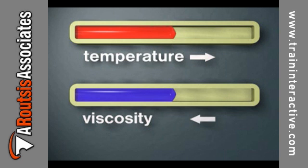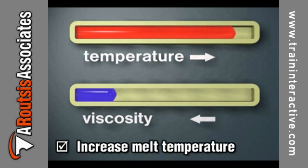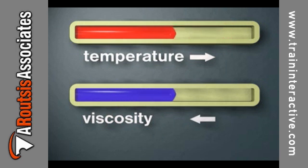You can also increase the melt temperature. Increasing the melt temperature lowers the viscosity of the material, making the part easier to fill. Keep in mind that temperature increases should be done in small increments, such as 5 degrees, and only as a last resort.